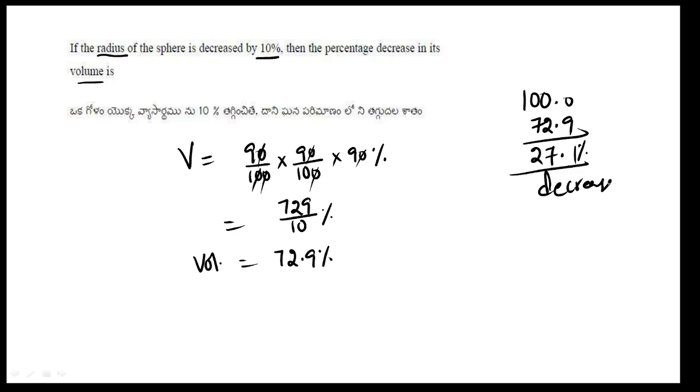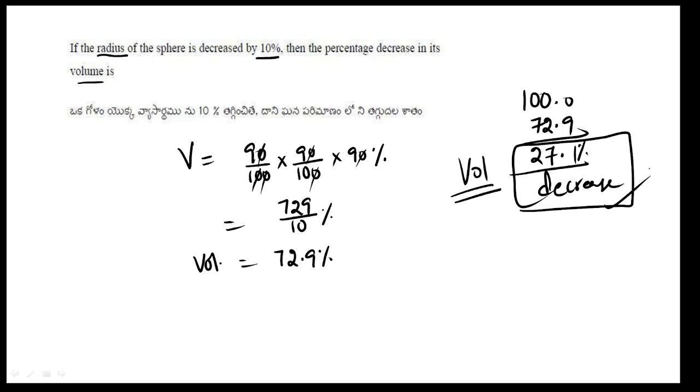So the final decrease in volume is 100 − 72.9 = 27.1 percent decrease.